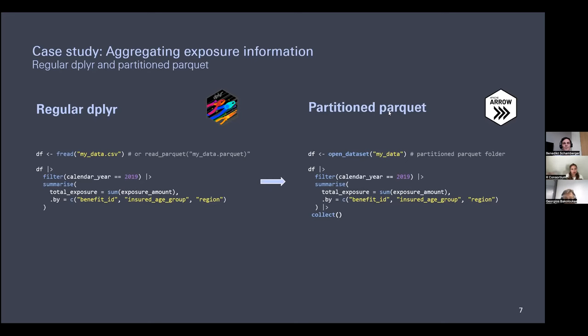Rob asks: 'Once the data is read into memory from a Parquet file, is the data stored in the R way — as a data frame?' With read_parquet, you actually have two options. The default reads it as a tibble into memory, which is more or less identical to a regular data frame with appropriate data types. There's also the option to read it as an Arrow Table — capital T — which is a specific Arrow data structure with different characteristics from typical data frames. But the default is just a regular data frame.